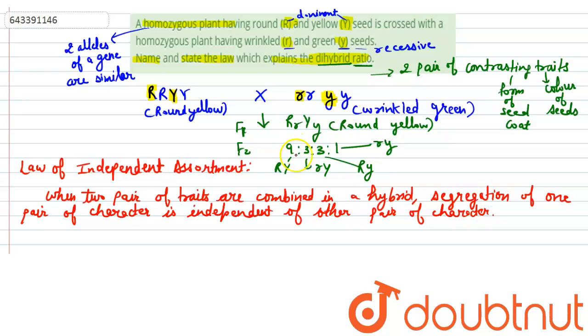That means it is not always compulsory that this form of seed coat, capital R, will pair with capital Y, and small r will pair with small y. Capital R is independent of Y. This is the law of independent assortment that explains the di-hybrid ratio. Thank you.